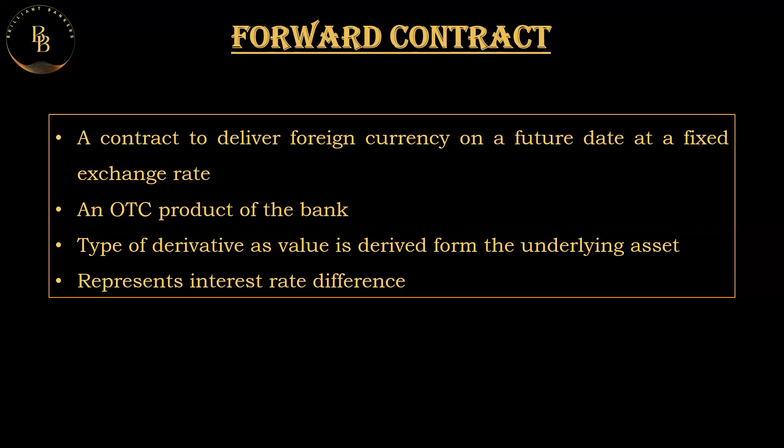A forward contract is always an agreement between two parties to buy or sell an asset at a specified future date for a price agreed upon. It is a type of derivative because its value is derived from an underlying asset. It represents the interest rate differences of two currencies and is always either at a premium or at a discount relative to the spot rate.